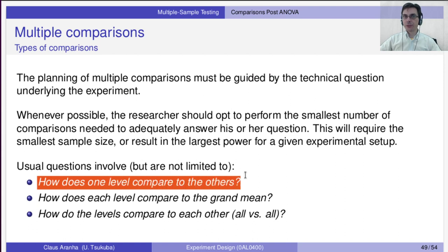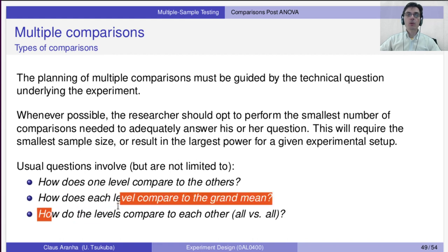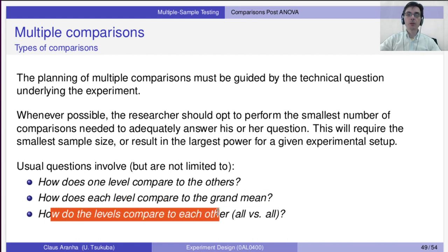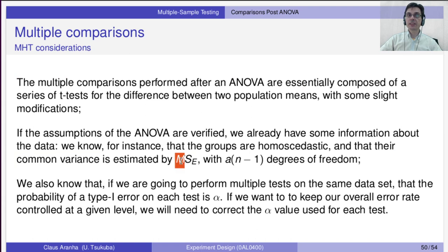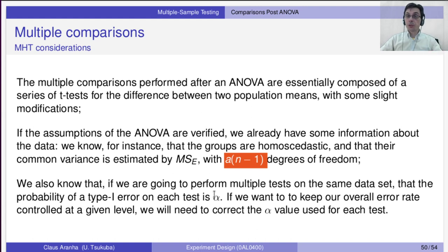Possible post-hoc comparison questions include: how does one level compare to the grand mean, or how do all comparisons relate to each other (all-versus-all). The multiple comparisons performed after ANOVA are essentially a series of t-tests based on what was decided to compare. With ANOVA assumptions verified, we know the groups have similar variances estimable by MS_error, which we use in our t-tests with the corresponding degrees of freedom. We also know we have an inflated Type 1 error probability, so we modify alpha to account for the number of comparisons — this is called an alpha correction.